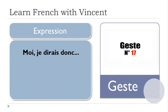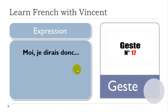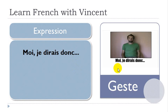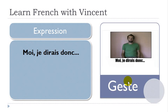The second gesture is 'Moi je dirais donc.' So you're discussing with someone and you would like to say something, add something, or express yourself, so you can make this gesture. You can see that Laurent is doing it mostly with his arm.